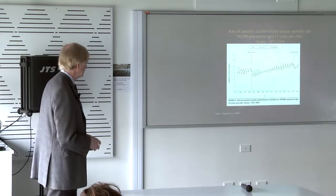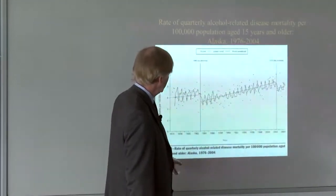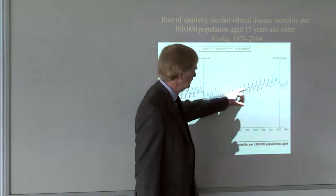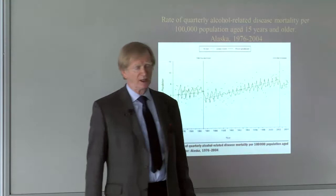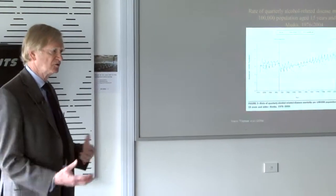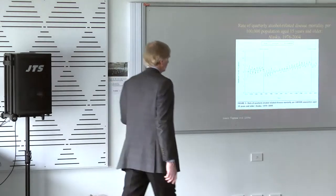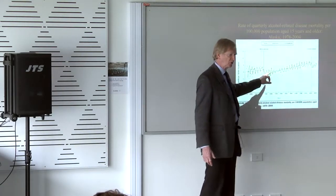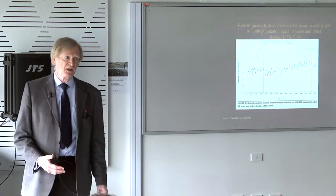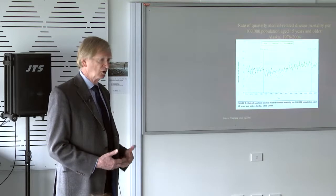In Alaska, when the price of alcohol was raised, alcohol-related disease mortality declined dramatically. Over time, probably due to inflation, alcohol-related mortality increased again, and then when the tax was raised again in 2002, mortality went down. Simple tax changes can have an impact. By not adjusting alcohol taxes for inflation, governments are effectively contributing to alcohol-related mortality — doing nothing is doing a disservice to public health by allowing alcohol to become cheaper and cheaper through inflation.